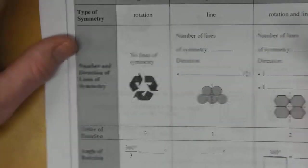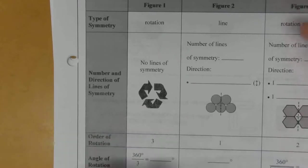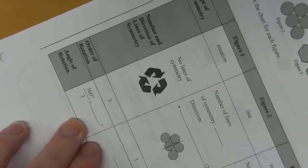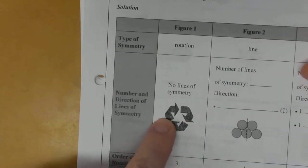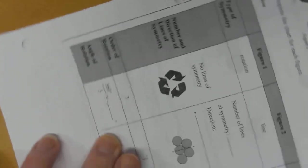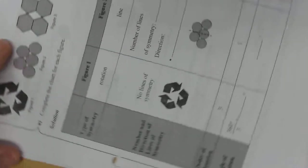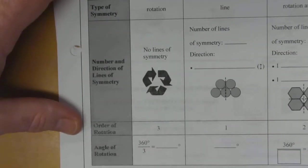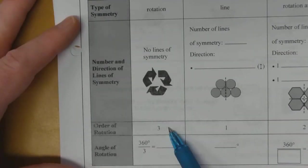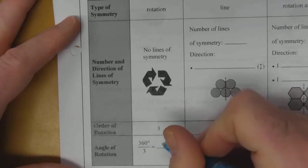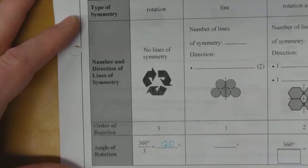However, if you rotate this shape with the arrows on the bottom—one, two, three—it's got an order of rotation of three, which means its angle of rotation is 120 degrees.